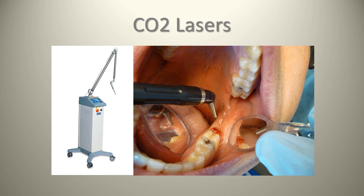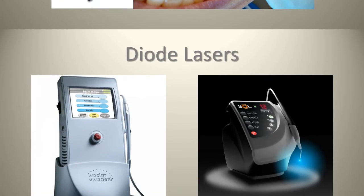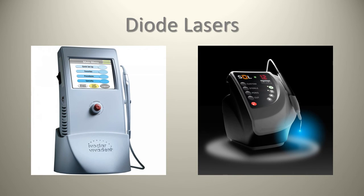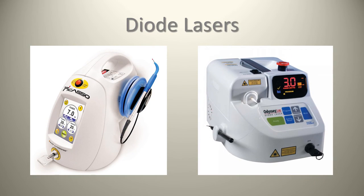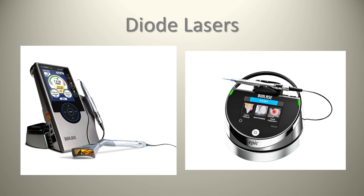CO2 lasers are large and expensive, costing around $30,000 to $50,000, but work well as a surgical instrument and for peri-implant disease treatment. Many offices already have diode lasers. Available diode laser products include the Ivoclar Vivadent Odyssey, the Sol by Denmat, the Picasso laser (also available as Picasso Lite at 3 or 7 watts), the older Odyssey diode laser, and the EZLase and Epic from Biolase.